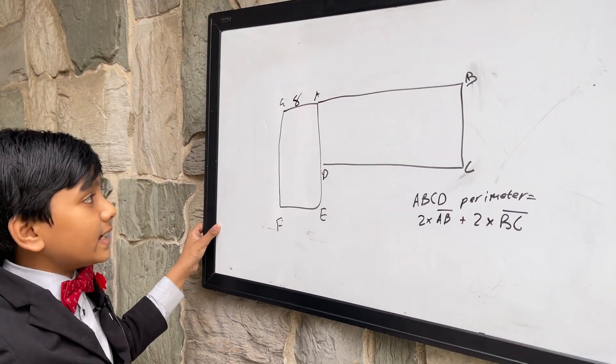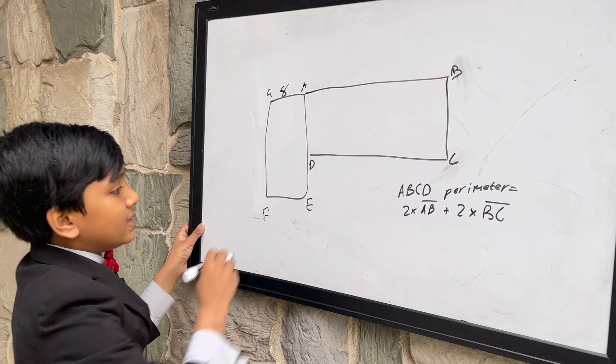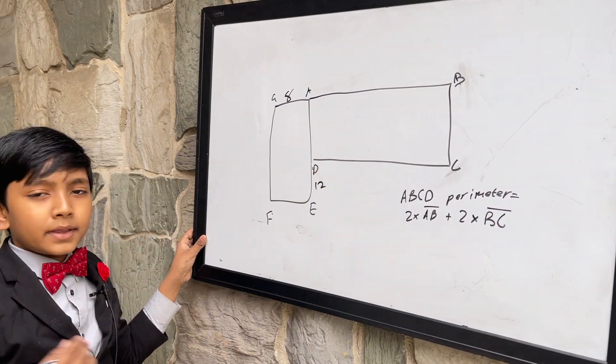Number one, GA is 8. Number two, DE is 12. But that's about it.